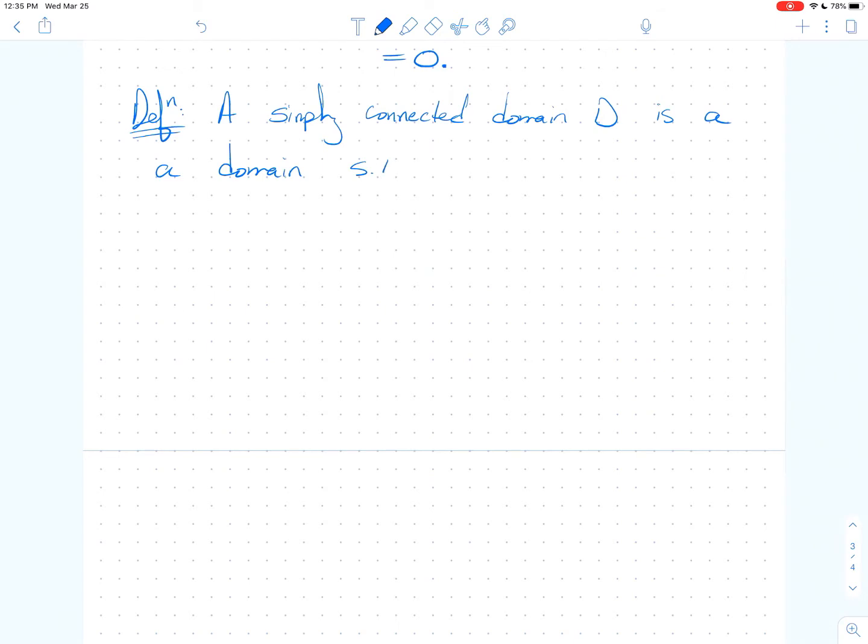What does it mean to be simply connected? Well, it's such that every simple closed contour within D encloses only points in D. So that's our definition.